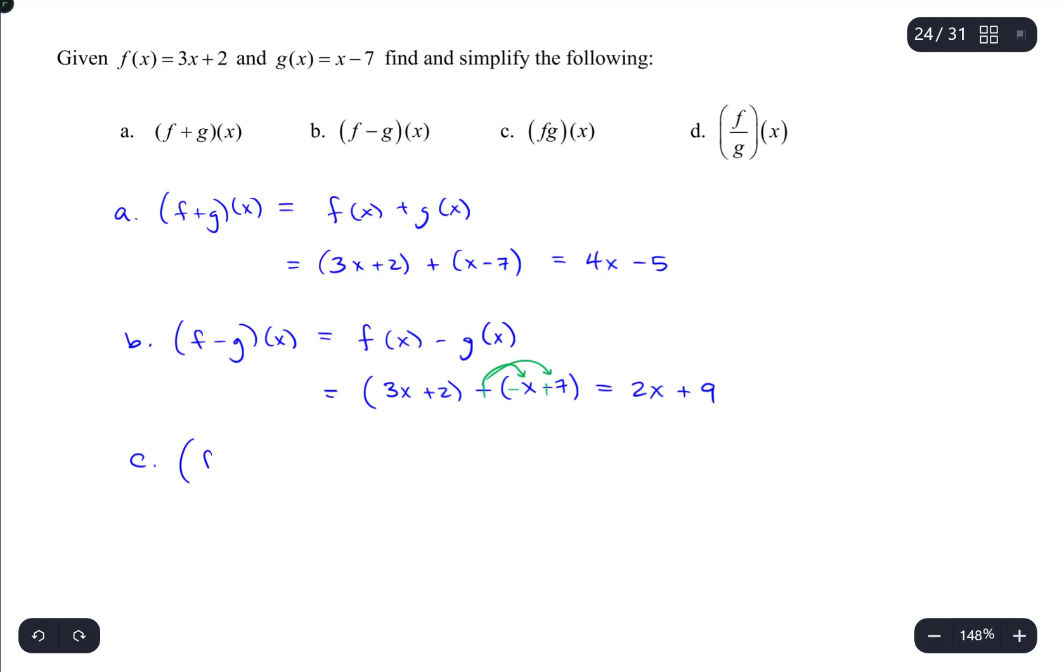Part c, when we write f right after the g, or (fg)(x) like this, it's implied that we're multiplying these values. So this would be f times g of x. We can evaluate that just by taking the individual functions and multiplying them. So this would be (3x + 2)(x - 7). And in order to evaluate this, we would just start by foiling.